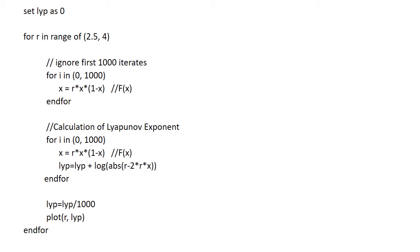In the second for loop, the Lyapunov exponent is calculated in the line: lyap is equal to lyap plus log of absolute value of r minus 2rx.